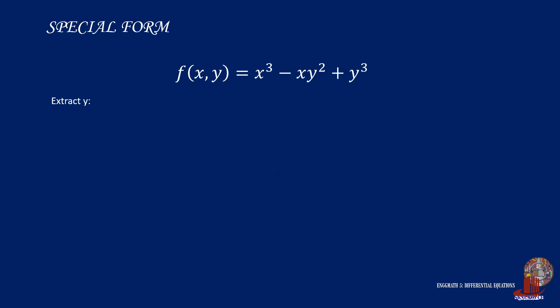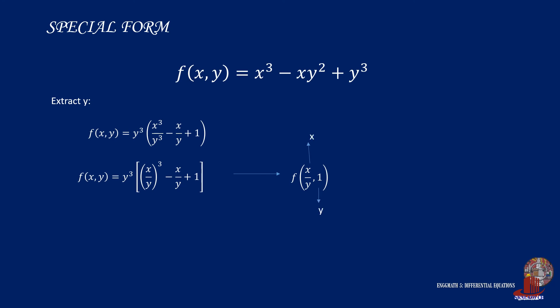Next, extracting y³ from the function gives y³ · (x³/y³ - x/y + 1). Simplifying gives y³ · ((x/y)³ - x/y + 1), interpreted as y³ · f(x/y, 1). Checking: x³ is the cube of (x/y), the middle term xy² is (x/y) · 1², and y³ is 1³. With both interpreted functions matching the special form, we confirm the function is homogeneous. The method of solving homogeneous differential equations is derived from this special form.